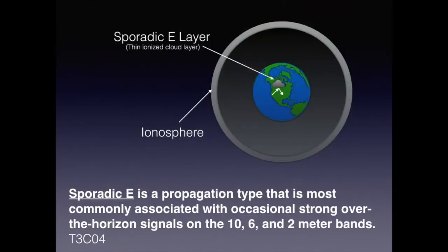The sporadic E layers form due to ionized gases creating a thin cloud formation. While it doesn't help much for long distance, it does extend the over-horizon signals for 28 MHz and above. You are responsible for knowing that sporadic E is a propagation type most commonly associated with occasional strong over-the-horizon signals on the 10, 6, and 2-meter bands.